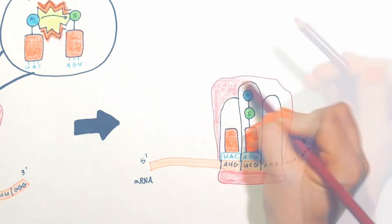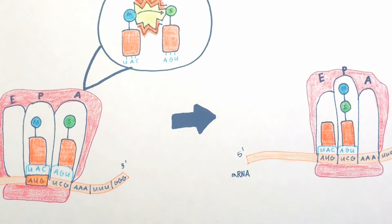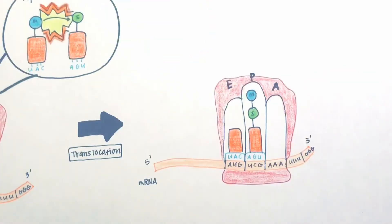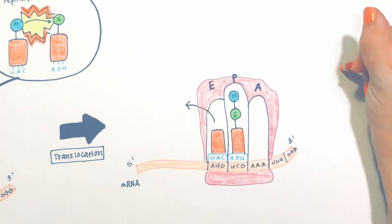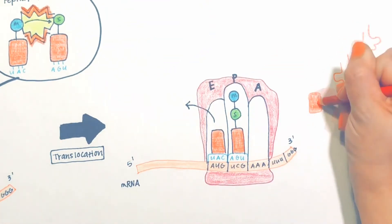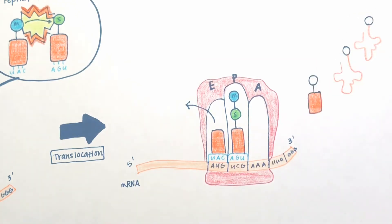The A-site is now unoccupied and ready to accept a new tRNA. This cycle is repeated for each codon on the mRNA.